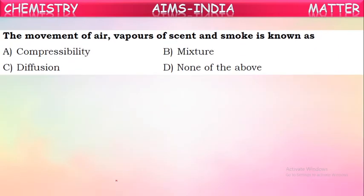Question 8: The movement of air or vapors of scent and smoke is known as what? The movement of these is called diffusion. The spreading property of gases is called diffusion. In other words, the intermixing of different gases with one another is called diffusion.